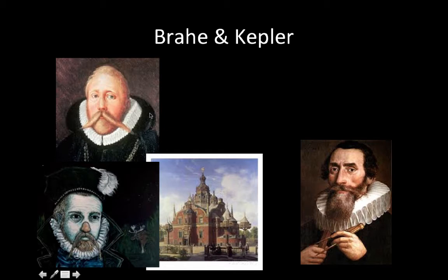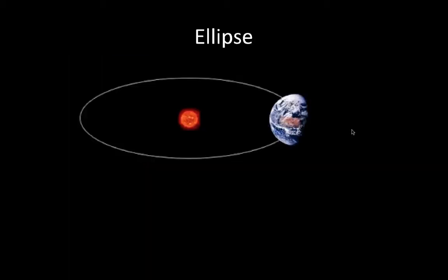After he died, Kepler, his assistant, stole some of his ideas, and he gets most of the credit for this. They discovered that the paths of celestial bodies travel in what's called an ellipse. An ellipse is pretty much just an elongated oval.